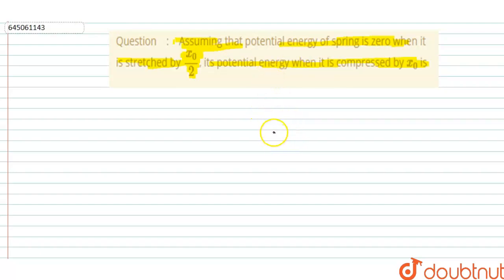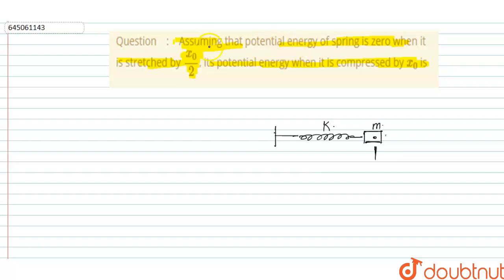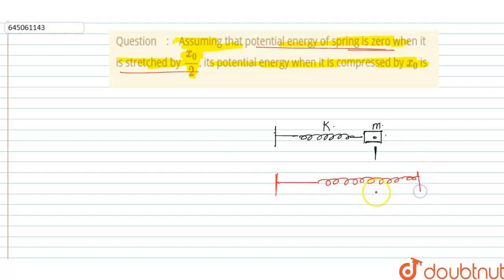In this question we have given two conditions. Let us consider this is a spring-mass system with a mass m and the spring having spring constant k. This is the initial condition and this is the mean position. In our first case, the potential energy of the spring is zero when it is stretched by x₀/2. This length is x₀/2.